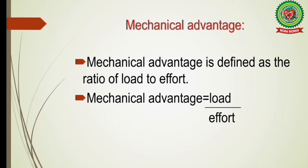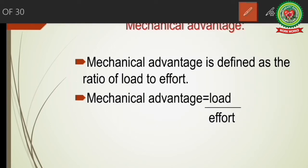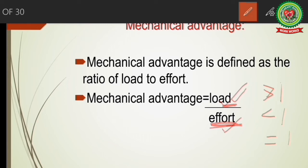The next topic is mechanical advantage — not in your books but questions are in the back exercises, so note it down. Mechanical advantage is defined as the ratio of load to effort. If we apply less effort to lift a heavy load, the mechanical advantage is greater than one. If we apply more effort, it is less than one. If effort equals load, it is equal to one. It is easiest to work with a machine whose mechanical advantage is greater than one.